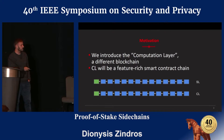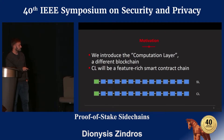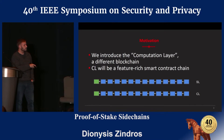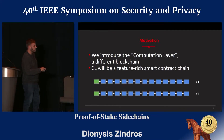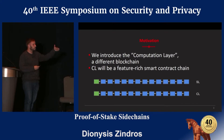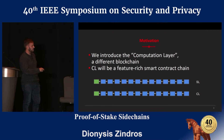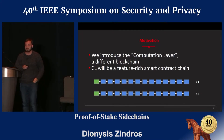We then introduce a second blockchain, the computation layer, which is a separate blockchain with a separate genesis block. It evolves independently of the settlement layer, and in the computation layer we want to have feature-rich smart contracts. You can think of the settlement layer as a savings account and the computation layer as a checking account where you can move your money around more easily and with more features.